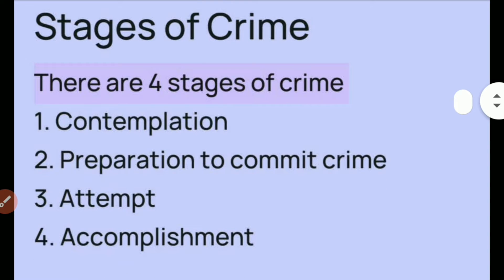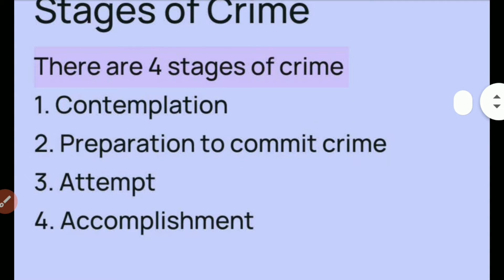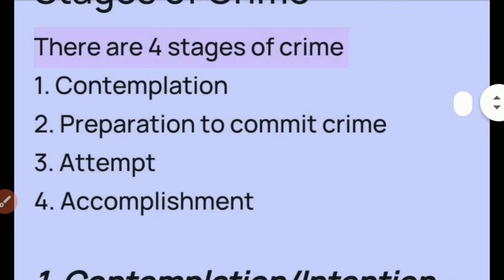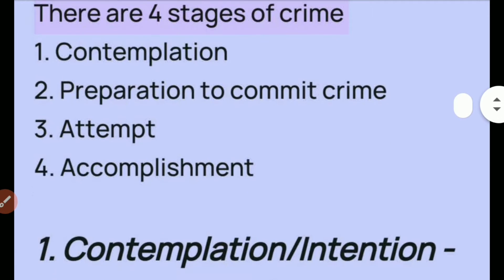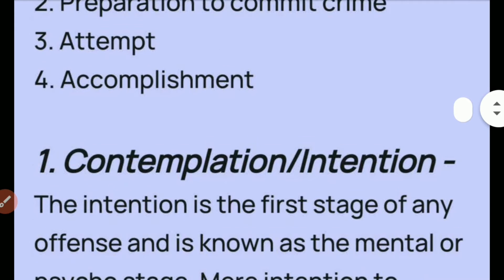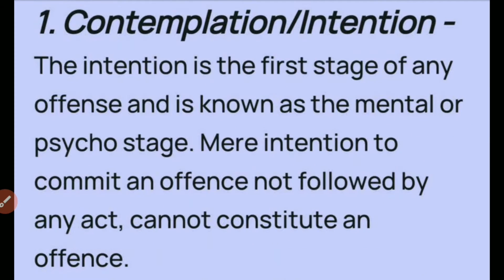Basically, there are four stages of crime. The first one is contemplation or intention. Second is preparation to commit crime. Third one is attempt. Fourth one, and this is the last stage, is accomplishment.